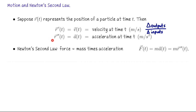The second derivative, R double prime, is the rate of change of velocity. If you write down change in outputs over change in inputs for that difference quotient, you get meters per second per second — that's meters per second squared — and that's our acceleration vector. So we have position, velocity, and acceleration.